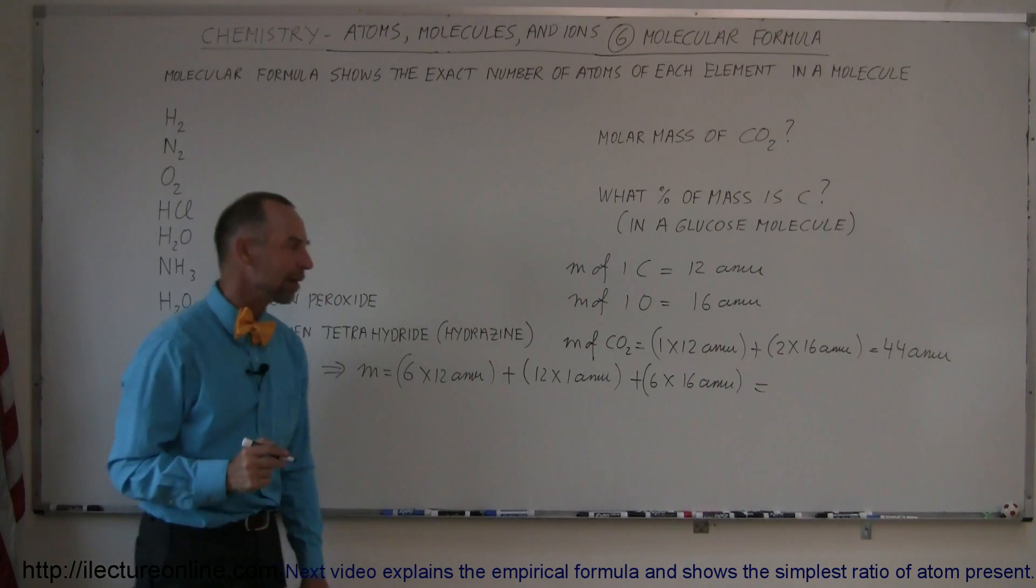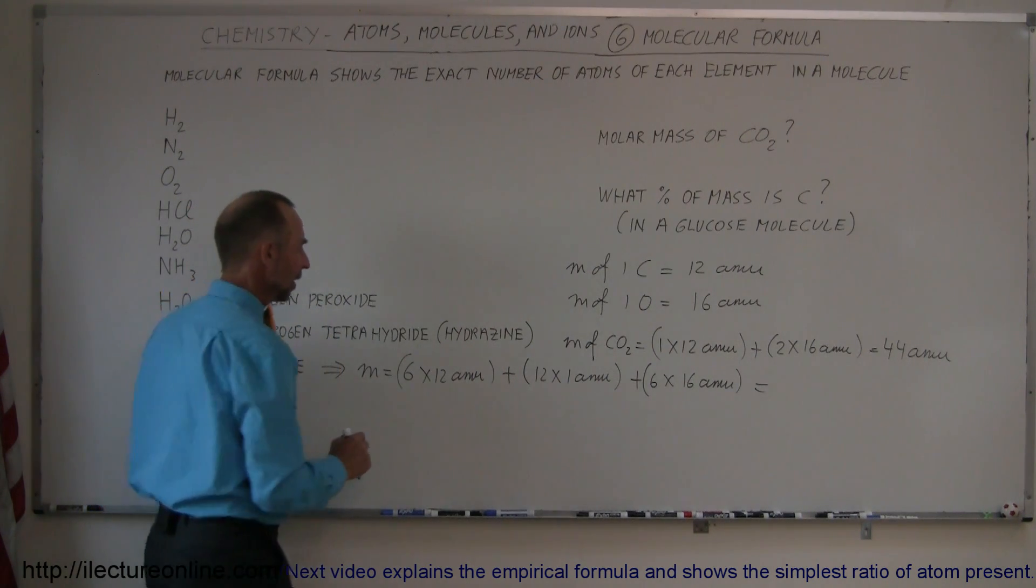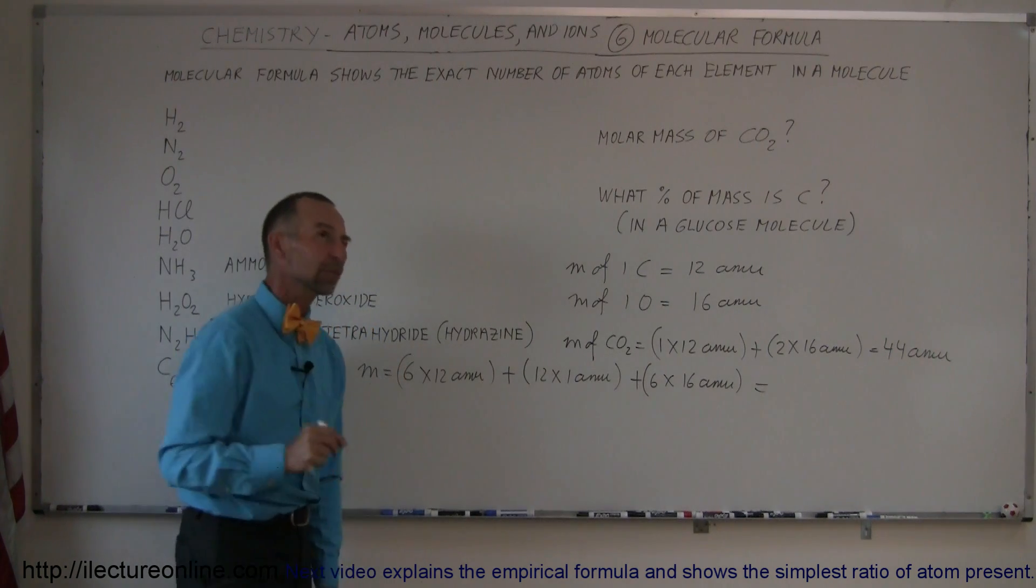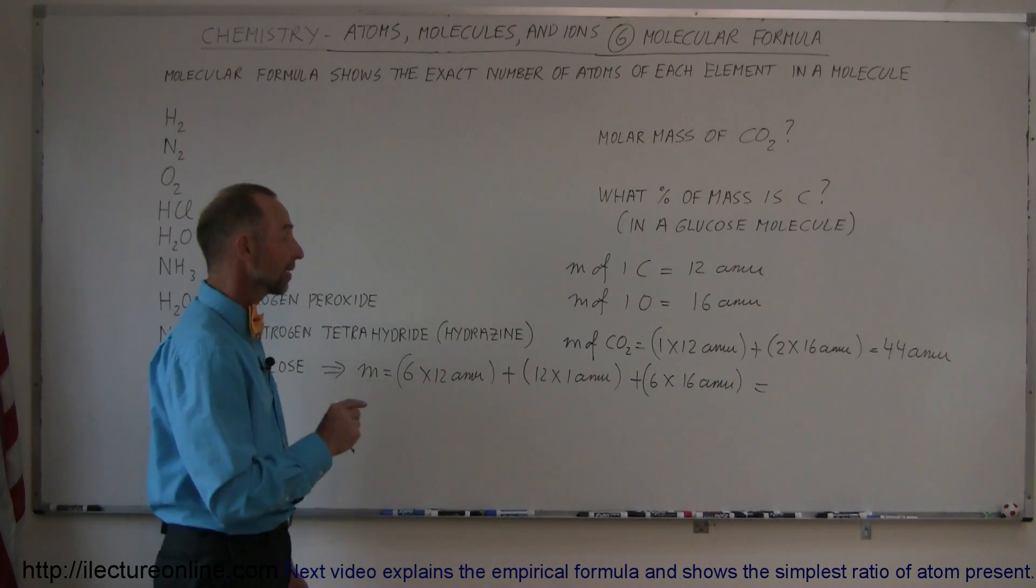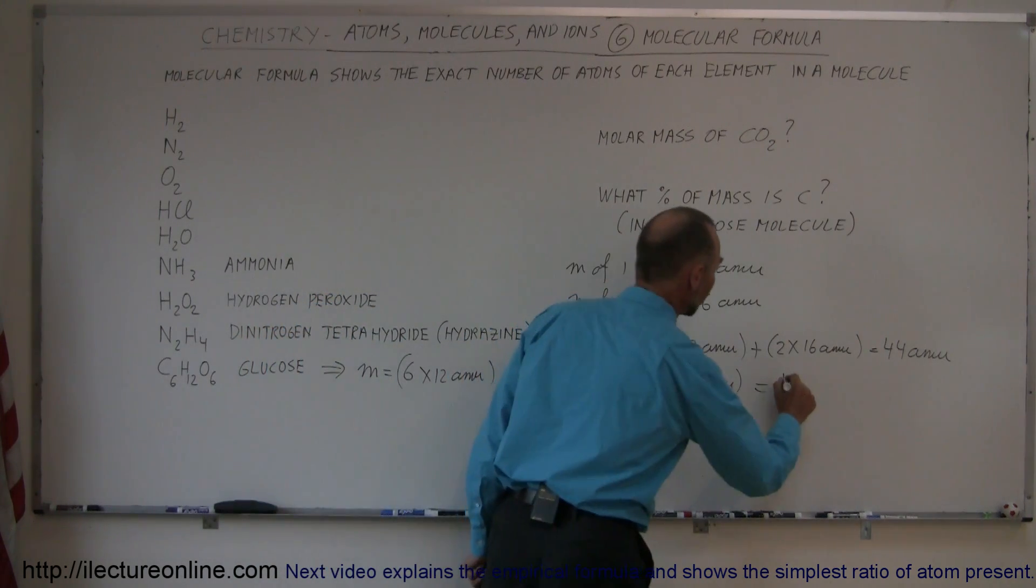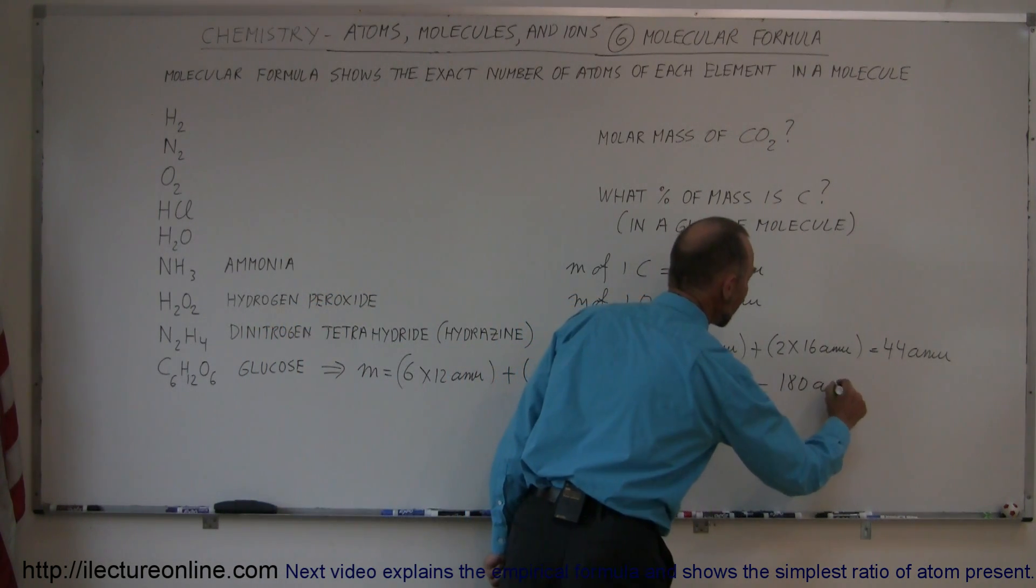And we add all that together, six times 16, that's 60, times 36 is 96, six times 72, six times 12 is 72, so 96 plus 72, that's 98, that's 168, plus 12 times 1, that's another 12, that would be 180 AMUs.